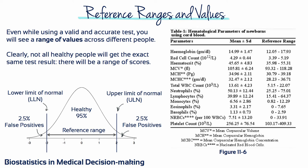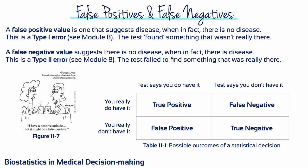Since there is variability among healthy people, there will be a range of normal values called reference values, which are set to cover 95% of the healthy population. That leaves 5% of the healthy population outside of the reference range — 2.5% with very low values and 2.5% with very high values. These values are false positives; you may think a person with values in these ranges is ill, when in fact they are not. False positives and false negatives can both occur because there is a range of values for both the healthy and the diseased populations.